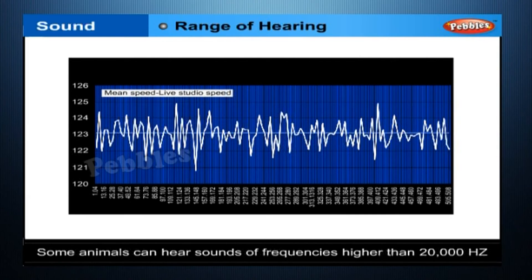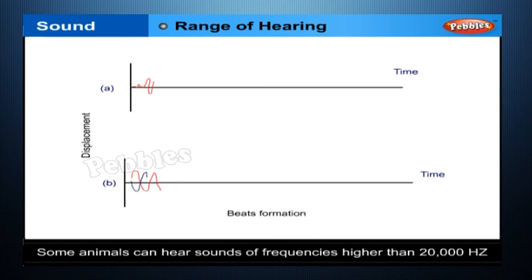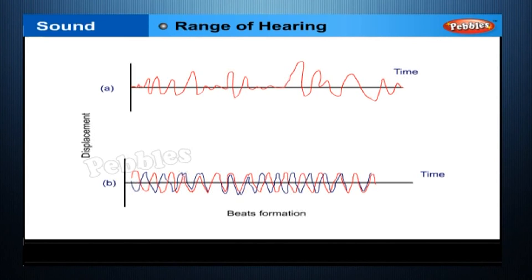Some animals can hear sounds of frequencies higher than 20,000 Hz. Dogs have this ability. The police use high-frequency whistles which dogs can hear but humans cannot. The ultrasound equipment, familiar to us for investigating and tracking many medical problems, works at frequencies higher than 20,000 Hz.